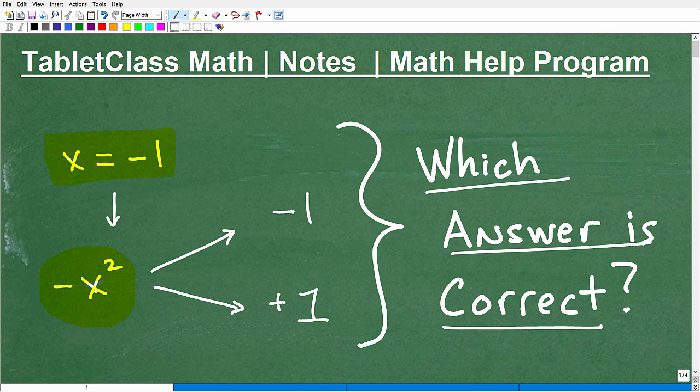Okay, so we have this expression negative x squared, and we're going to let x equal negative 1. We're going to assign x the value negative 1, and we plug this in and simplify. We're going to get either negative 1 or positive 1 as the answer.